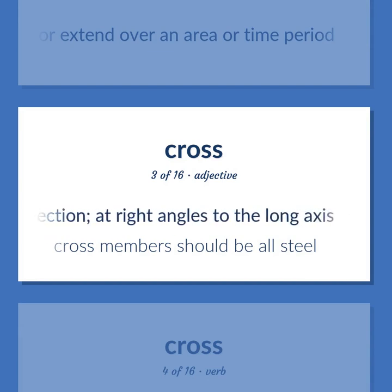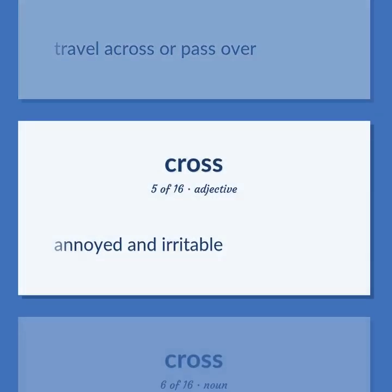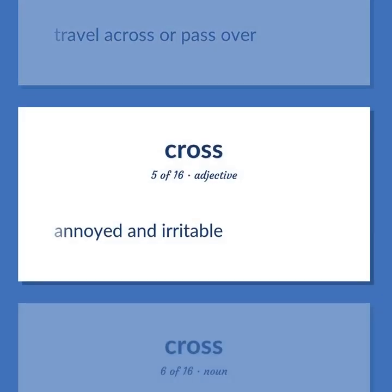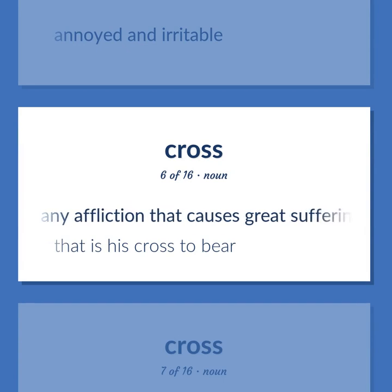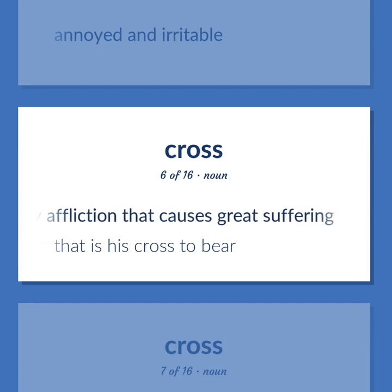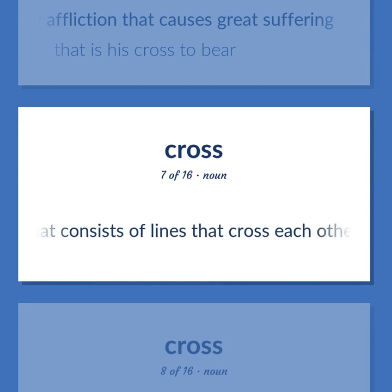Cross members should be all steel. Travel across or pass over. Annoyed and irritable. Any affliction that causes great suffering — that is his cross to bear. A marking that consists of lines that cross each other.